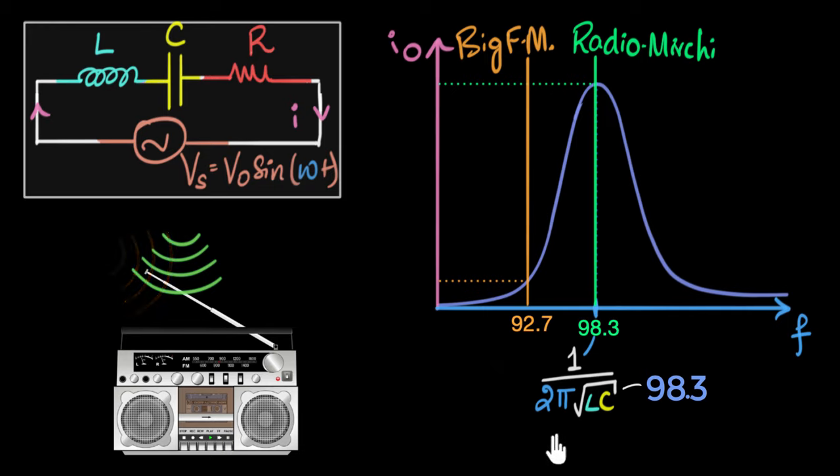Now imagine you want to switch to Big FM. What should you do? I think you can now guess. We need to reduce the resonant frequency of our LCR circuit. How do we do that? Since you want to reduce this, we need to increase the denominator. So you either increase the inductance or you increase the capacitance. In some radios, when you turn the knob, the distance between the plates of the capacitor changes, and as that distance changes, the capacitance changes. In this particular case, all we have to do is increase the value of capacitor.